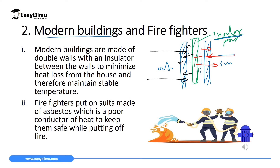Another application is in firefighters' clothing. When firefighters are fighting fire, they wear special suits made of asbestos. Asbestos is a special material which is an insulator or a poor conductor of heat. When these firefighters enter a place which is on fire, heat cannot be conducted from outside to inside their suits, so they cannot get burned. These clothes also cannot catch fire easily — they can move inside fire without catching fire because these materials are totally poor conductors of heat.